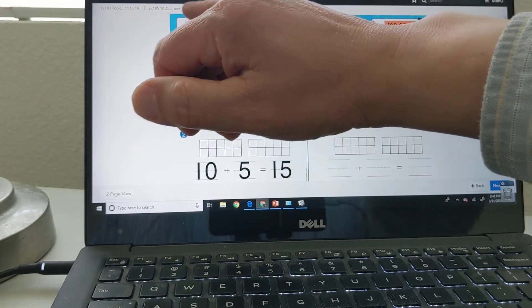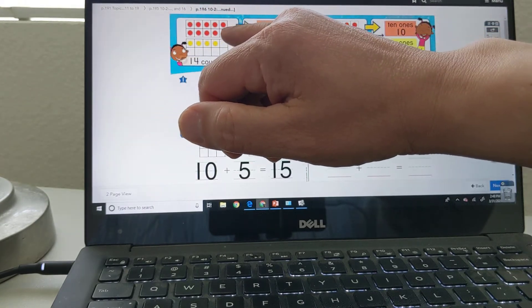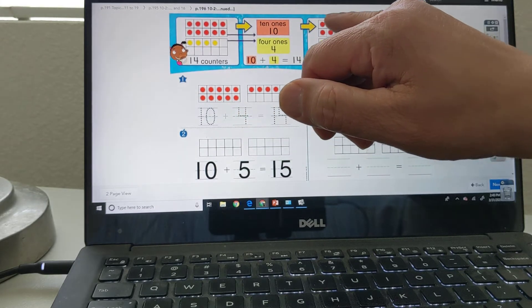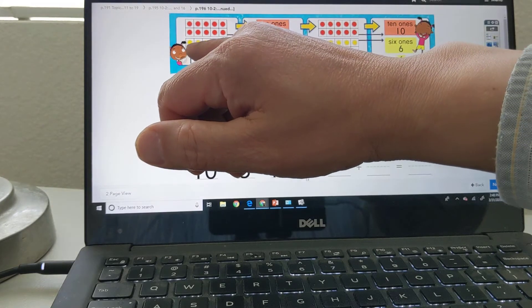We've got 10 reds here. 1, 2, 3, 4, 5, 6, 7, 8, 9, 10. 10 ones, 10. 10 red. 10 ones, 10. Plus 4. 1, 2, 3, 4. 4 ones, 4.